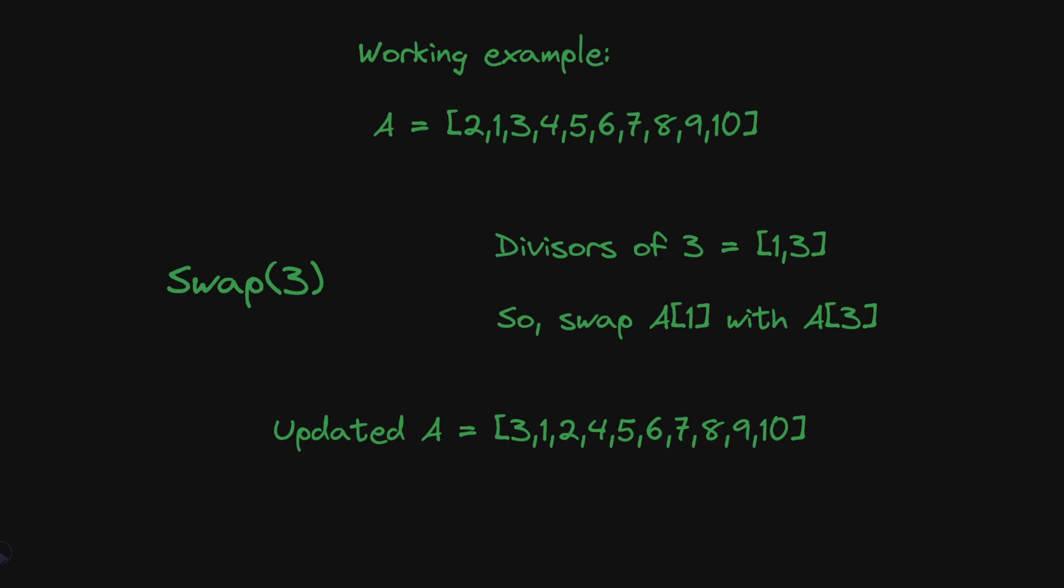Moving further with the working example, when we call swap 3, the divisors of 3 are 1 and 3. The largest divisor of 3 which is not equal to 3 is 1. So we swap a1 with a3. The 3 comes in front and 2 moves back. The array becomes 3, 1, 2, 4, 5, 6, 7, 8, 9, 10.